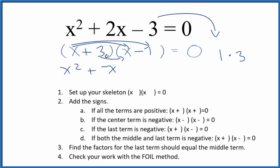Then we have our inside terms, 3 times x, 3x. Last terms, 3 times negative 1. Right here, this is our last term. That gives us negative 3.